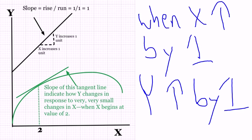So the slope tells us how x impacts y, and that's what we're often concerned with—how one variable impacts another.